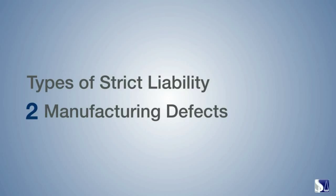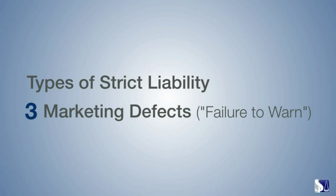The third category for strict product liability is marketing defects, which can also be seen as a failure to warn. A product can be flawless in its design and manufacturing and still be defective. This occurs when the manufacturer doesn't provide the user with enough information to use the product safely, or misstates a product's benefits.